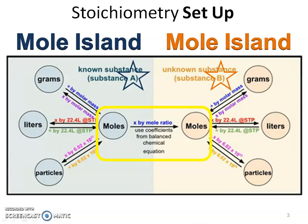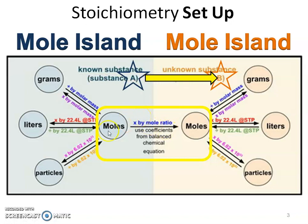This is all of the stoichiometry set up for our dimensional analysis problems. We're going to start at any one of these quantities, go to moles of substance A — that small island — then use the coefficients from the balanced equation to come up with our mole ratio to get from substance A to substance B. This is just moles to moles, but ultimately we're going to want to go back to one of these other quantities for substance B. Moles to these other quantities is really mole island again.